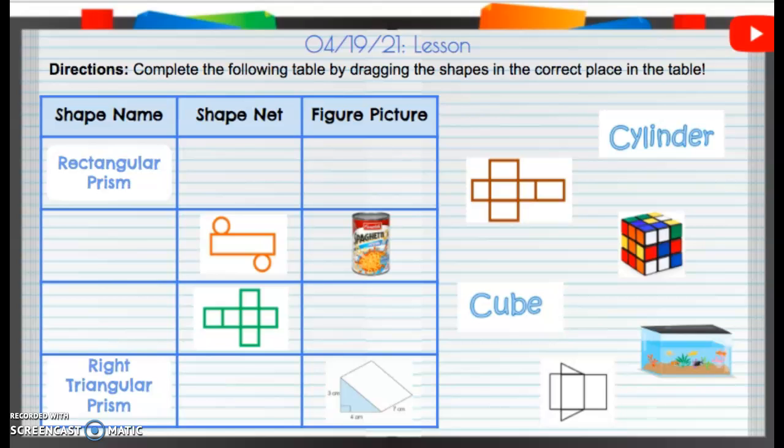All right, our lesson. We're going to complete this table by dragging these shapes in the correct place in the table. The shape name, shape net, and the figure of the picture.